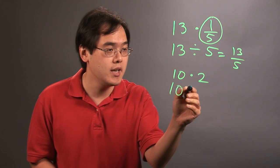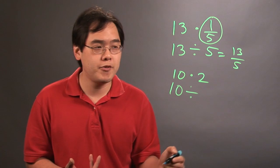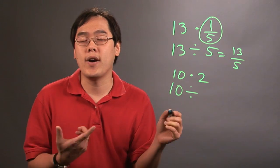Again, you keep the first number, 10. You're changing the operation from multiplication to division. But like we had talked about before, you're going to take the 2 and find its reciprocal.